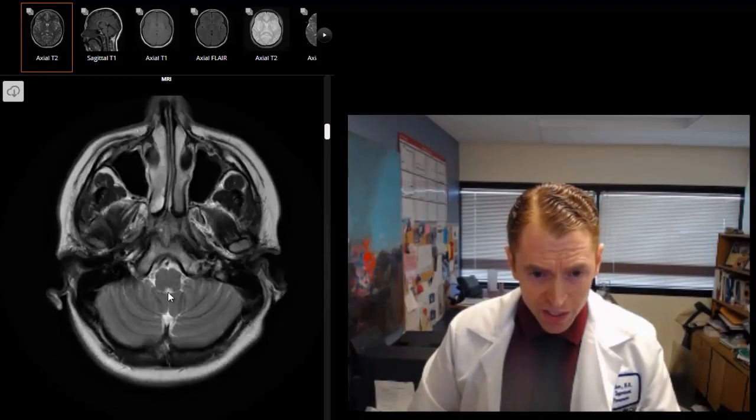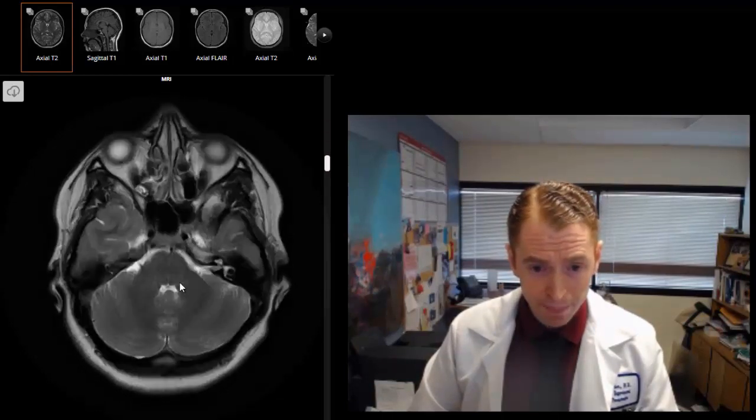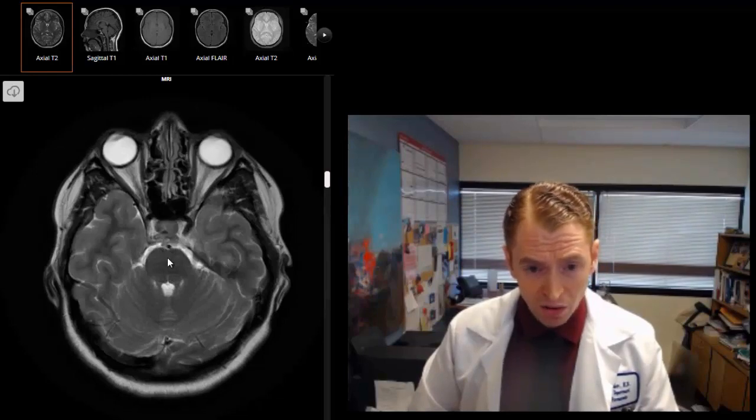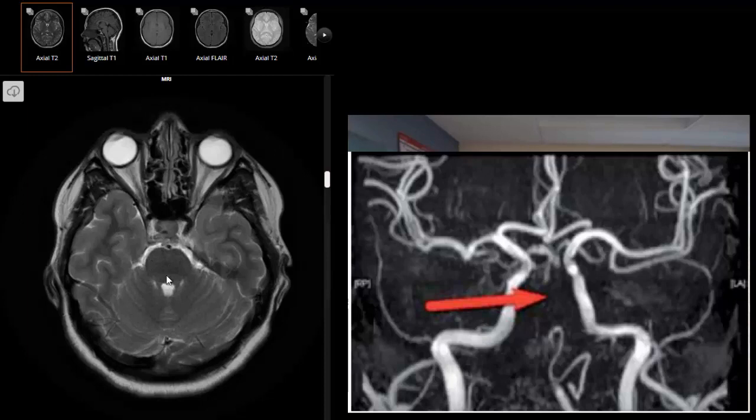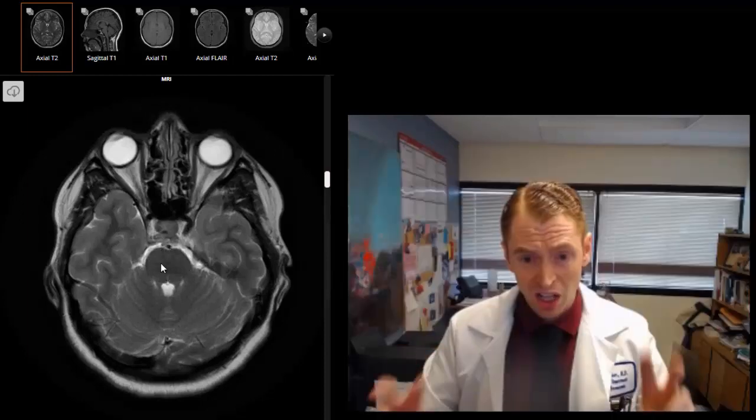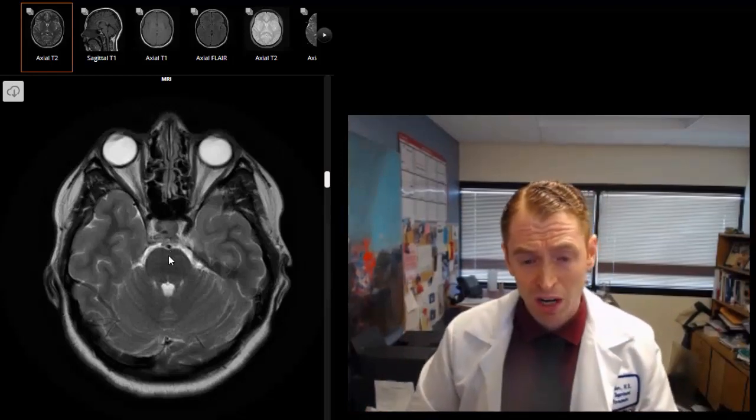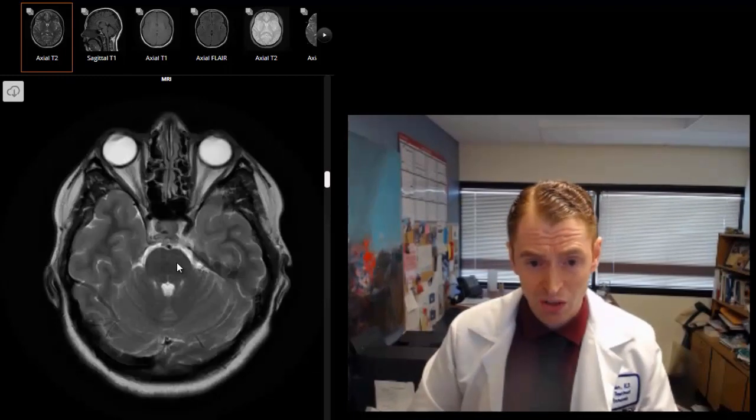Looking at the arteries and the posterior circulation, which are the vertebral and basilar arteries, if there is a stroke in the basilar artery, sometimes that can cause extensive injury to the pons, which can cause paralysis of all muscles in the body except for movement of the eyes. That can cause what is known as locked-in syndrome. When you hear about locked-in syndrome, that would be the most common cause. Obviously, that's a very severe and rare neurological deficit.